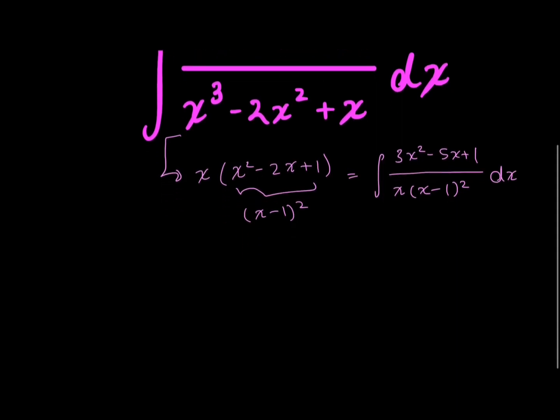So I first have my first part is that A over x. My second part is that repeated x minus 1 squared plus C over x minus 1 squared. And this is all under the integral dx.